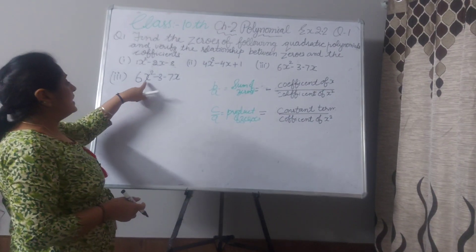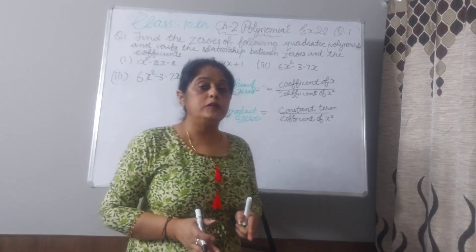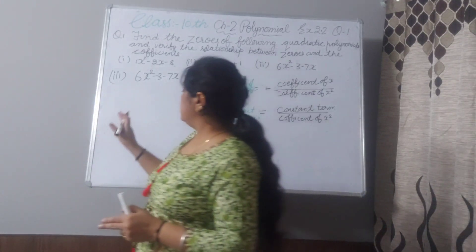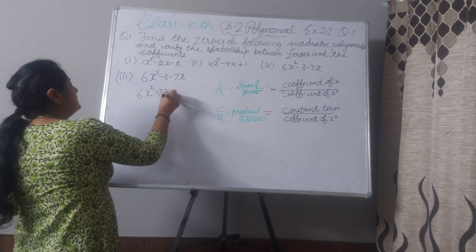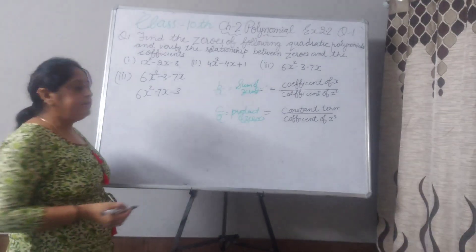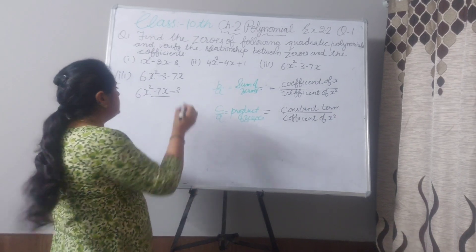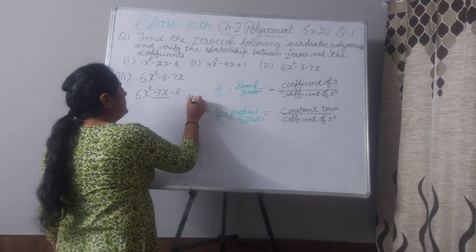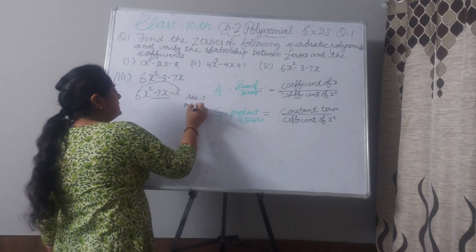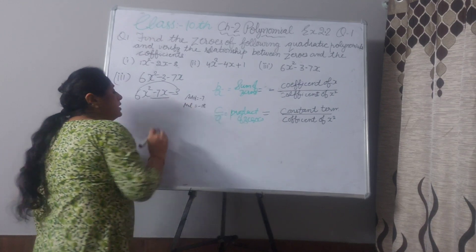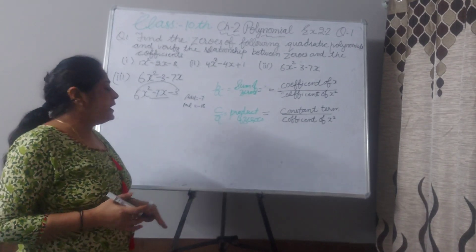Now, third part: 6x² minus 3 minus 7x. As I told you, first arrange in descending order: 6x² minus 7x minus 3. Now split the middle term. We need two numbers: when we add, we get minus 7, and when we multiply, 6 times minus 3 equals minus 18. The two numbers are minus 9 and plus 2.